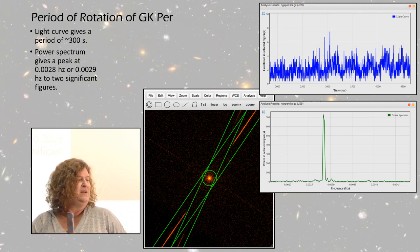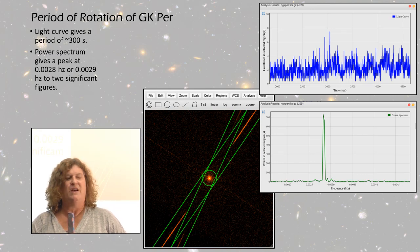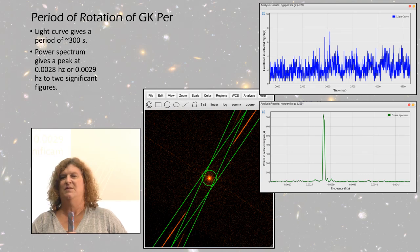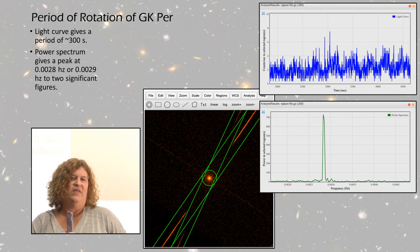When you do a power spectrum, you get a peak at 0.0028 hertz or 0.0029 hertz. You can also see in the power spectrum there's some other mechanism going on. There's some little bumps on either side of that bigger peak, so there's some other things that might be periodic going on.